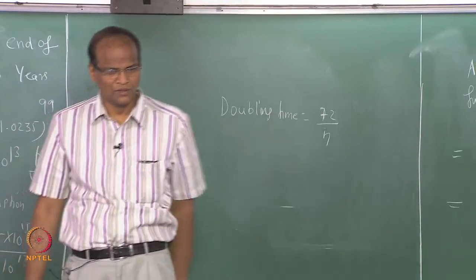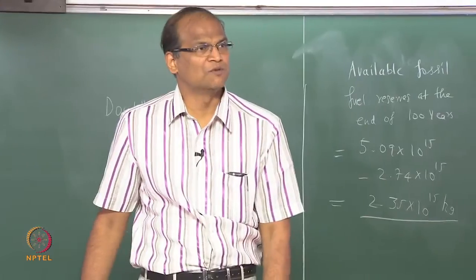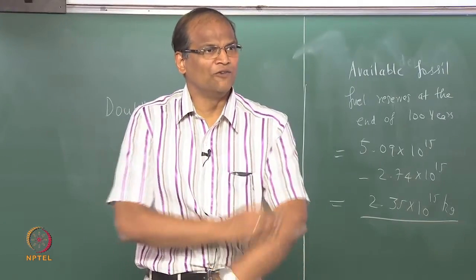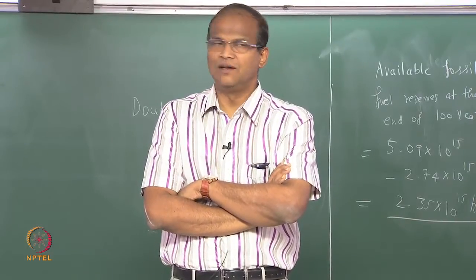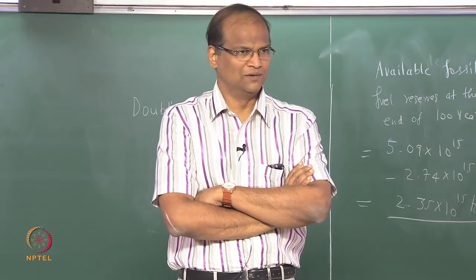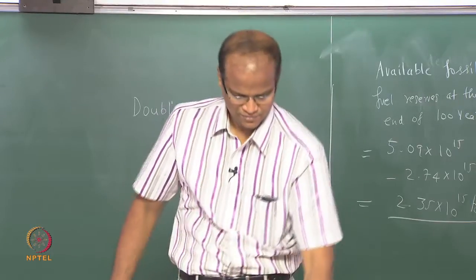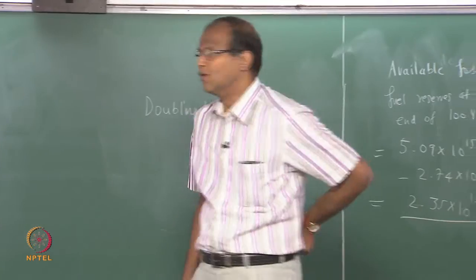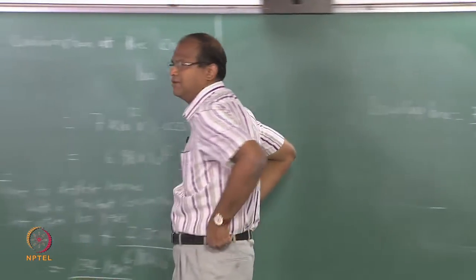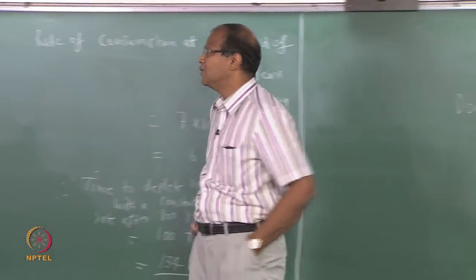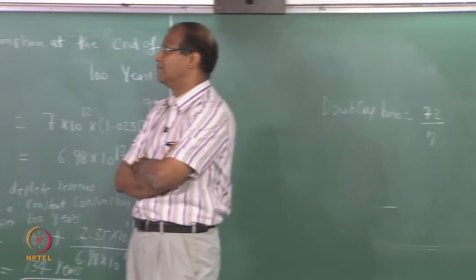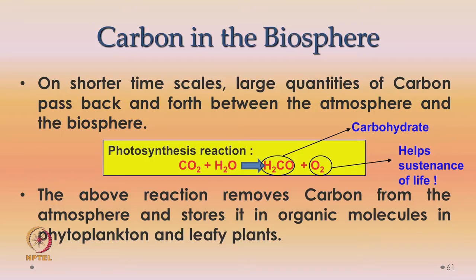The challenge is to make systems more fuel efficient and look for alternative fuels — hybrid vehicles, electric vehicles, solar photovoltaic, solar thermal, and so on. Now, carbon in the biosphere: on shorter time scales, large quantities of carbon pass back and forth between the atmosphere and biosphere basically because of photosynthesis, burning, and so on. The photosynthesis reaction is: CO₂ + H₂O → CH₂O + O₂ (carbohydrate plus oxygen).